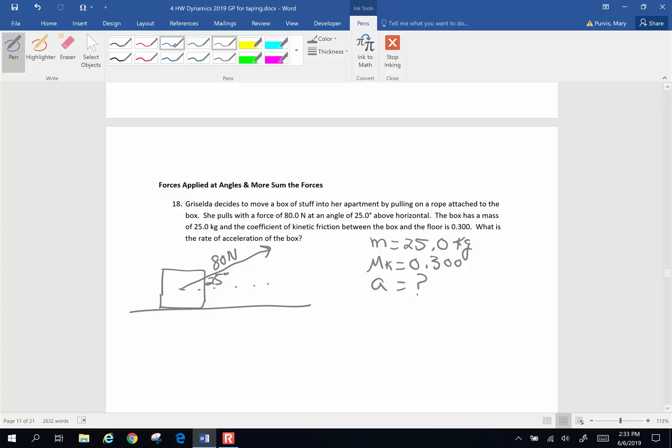We're going to draw a pretty box. She has a rope attached to the box. She is going to pull on that rope with 80 newtons of force at an angle of 25 degrees above the horizontal. Now let's draw our forces. We have gravity down, normal force up, and friction goes backwards.